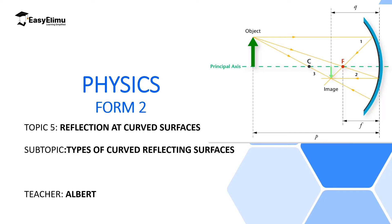Welcome to ECLIMU Learning Simplified and welcome to this lesson. In Form 1, we discussed a topic — rectilinear propagation of light — which lies under a branch of physics called geometrical optics. In that topic, we discussed light traveling in a straight line in a homogeneous medium, the proofs that light traveled in a straight line, and how light interacts with plane surfaces, specifically plane mirrors and how images are formed in a plane mirror.